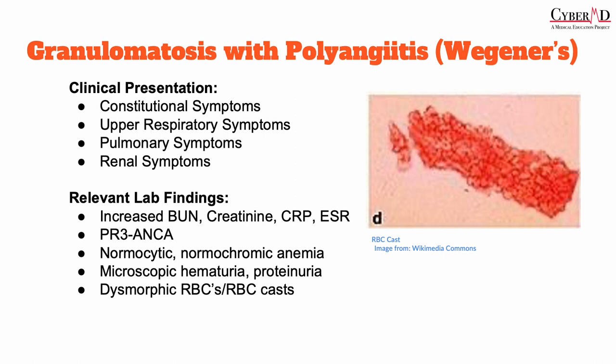If you see involvement of these three systems in a patient and the rest of the clinical and laboratory findings are correlating, you should be highly suspicious for granulomatosis with polyangiitis. Laboratory testing may show elevated ESR and CRP, elevated BUN and creatinine, evidence of PR3-ANCA (which is a C-ANCA, positive in about 90% of patients), normocytic normochromic anemia, and urinalysis showing proteinuria or hematuria with urine sediment.